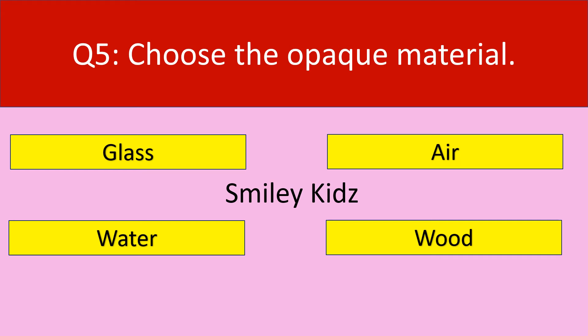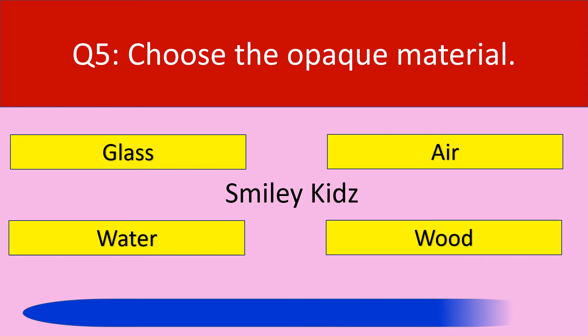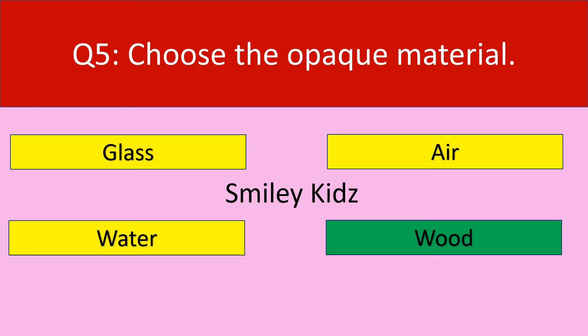Question number five. Choose the opaque material. Options are glass, air, water, wood. Your time starts now. Your time is up. The correct answer is wood. Wood is the opaque material.